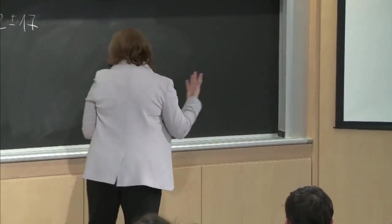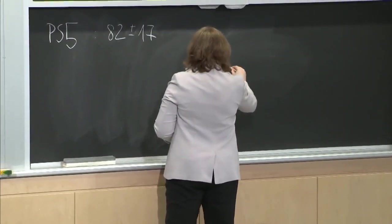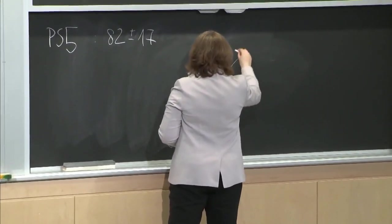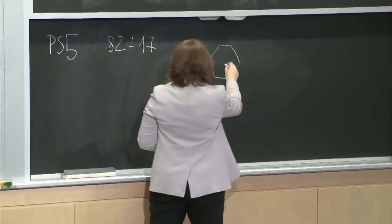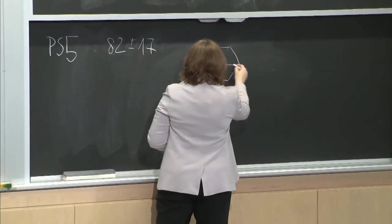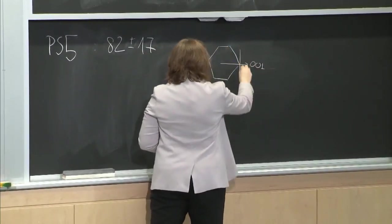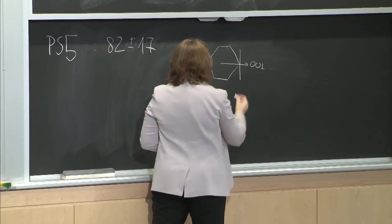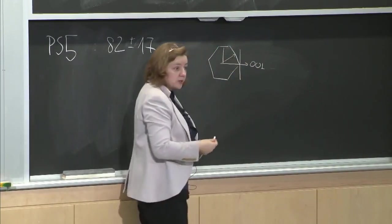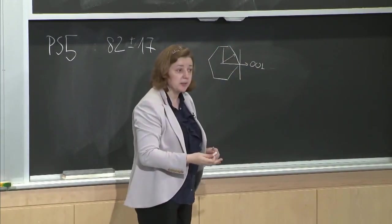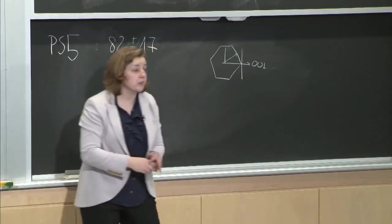For example, if you have a given shape like this and you say that this is the 001 direction, meaning this is the 001 plane, then you know all of the other directions and can calculate them. That is what you're being asked to do in the problem set.